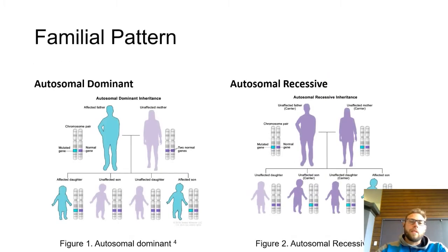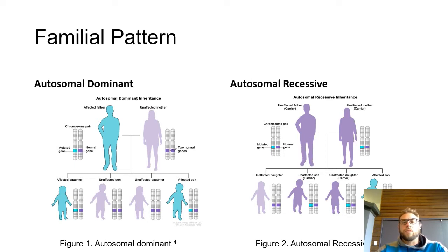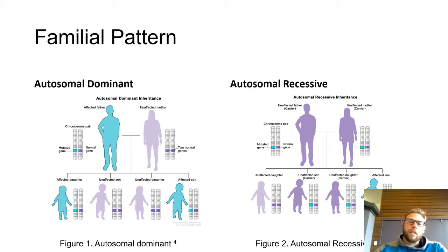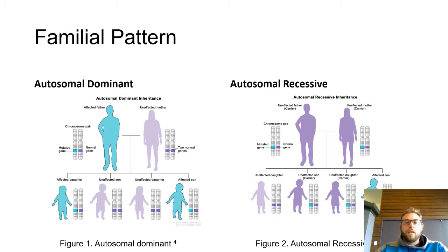Before we get to that, we need to understand what we mean by a familial pattern. Albert Schönberg's disease is an autosomal dominant disease, meaning one parent has a defective gene mutation and both sons and daughters have an equal opportunity to inherit the mutation, as opposed to autosomal recessive inheritance.